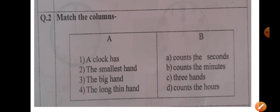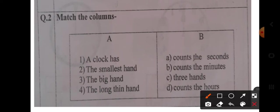Question number two, match the columns. A clock has three hands. The smallest hand counts the hours. The big hand counts the minutes. The long thin hand counts the seconds.